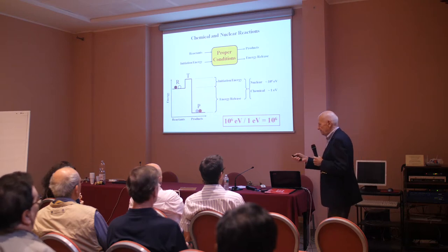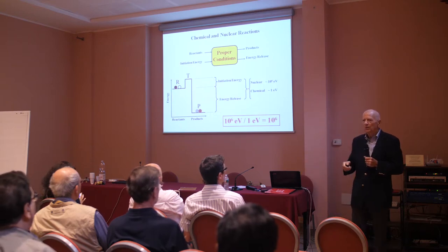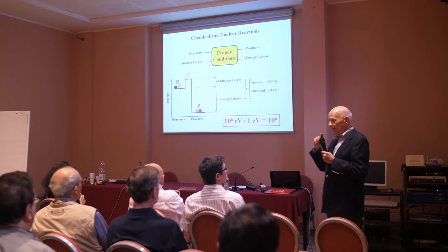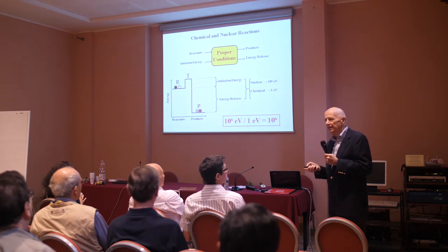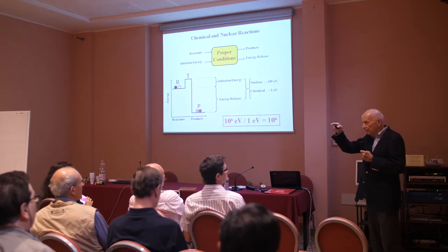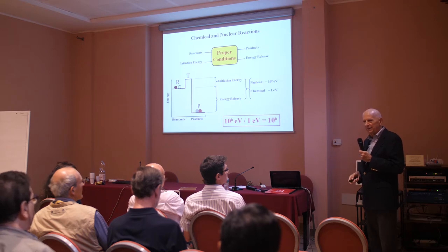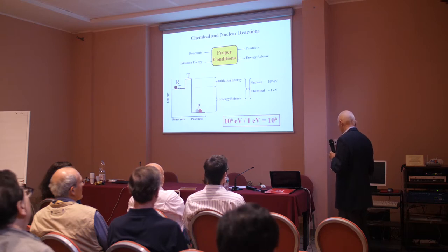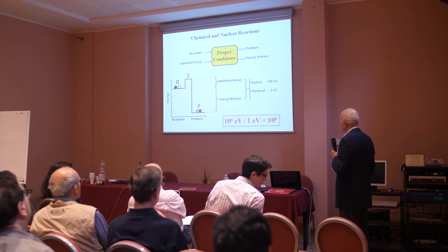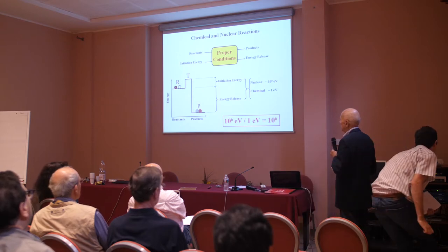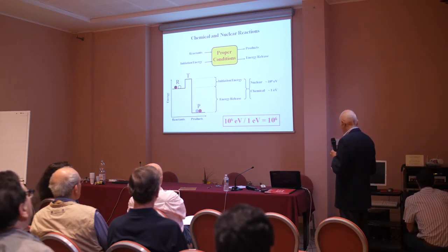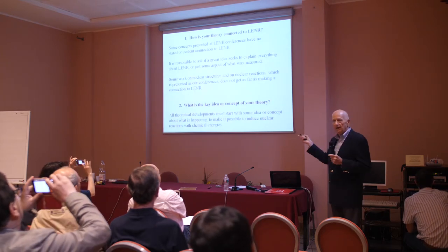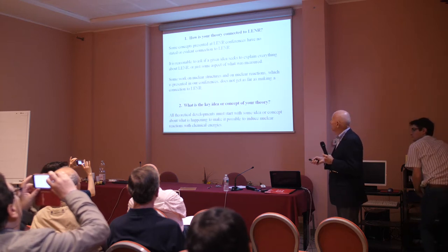I'd like to conduct a pop quiz and ask each of you: what's the largest reported gain in an LENR experiment so far? There have been gains all over the place. The answer is 800 — thermal out divided by electrical in, reports of gains as high as 800. They haven't been replicated, but they're out there. With this kind of background, I'm asking theoreticians how is it that you get from here to there over this transition state, whatever it is.